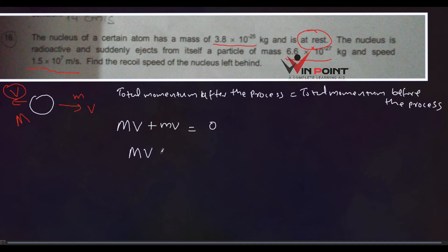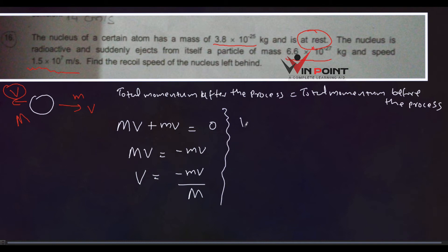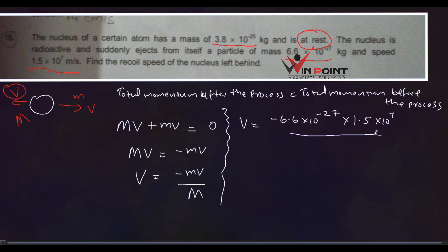So we write MV + mv = 0, which gives MV = −mv, and therefore V = −mv / M. Now substituting all values: m = 6.6 × 10⁻²⁷, v = 1.5 × 10⁷, and mass of nucleus M = 3.8 × 10⁻²⁵.